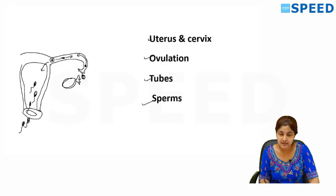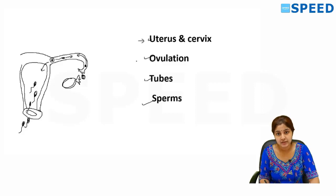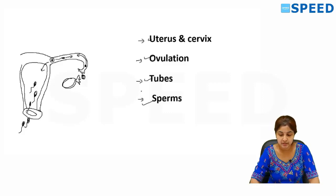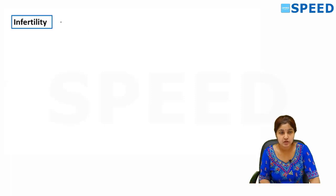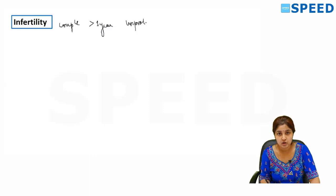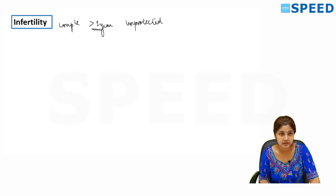So all of these are the major factors that need to function properly for a woman to conceive. Any abnormality in these can lead to infertility issues or difficulty in becoming pregnant. What is infertility? When a couple is not able to conceive even after one year of unprotected sexual intercourse — not using any kind of contraception for more than one year — but they are not able to get pregnant, it is called infertility.